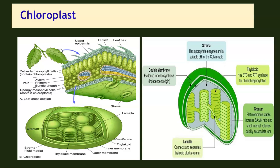In higher plants, the chloroplasts are discoid or lens-shaped. Each chloroplast is bound by a double membrane. Inside the membrane is found a ground substance called the stroma. Inside the stroma is found a system of chlorophyll-bearing double-membrane sacs or lamellae. They are stacked one above the other to form the grana — collectively called a granum, and individually called grana.